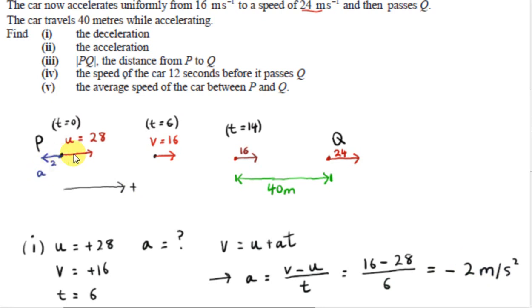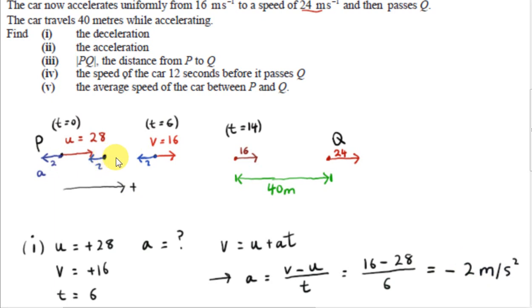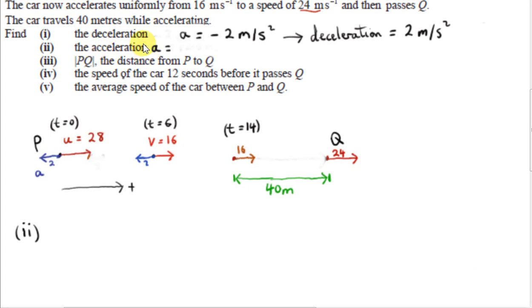For the entire first leg, the acceleration is constant at minus 2 meters per second squared. So at T equals 6, the acceleration is also minus 2. Anywhere along the first leg of the journey, the acceleration is minus 2, and the velocity is somewhere between 28 and 16. Next, we get the acceleration for the last leg of the journey. The initial velocity is 16, the final velocity is plus 24, and we have the distance S of 40 meters.